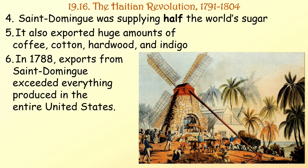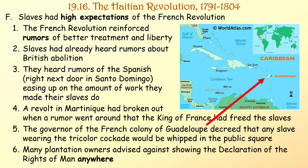Saint-Domingue was supplying half the world's sugar and also exported huge amounts of coffee, cotton, hardwood, and indigo. In 1788, exports from Saint-Domingue exceeded everything produced in the entire United States. Slaves had high expectations of the French Revolution — it reinforced rumors of better treatment and liberty. They had heard rumors about British abolition, and rumors of the Spanish in Santo Domingo easing up slave labor. A revolt in Martinique had broken out over a rumor that the King of France had freed the slaves. The governor of Guadeloupe decreed that any slave wearing the tricolor cockade would be whipped in the public square.